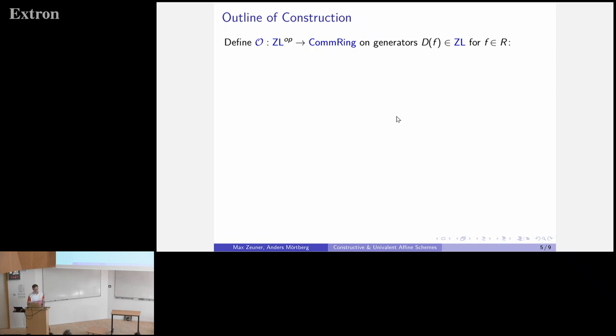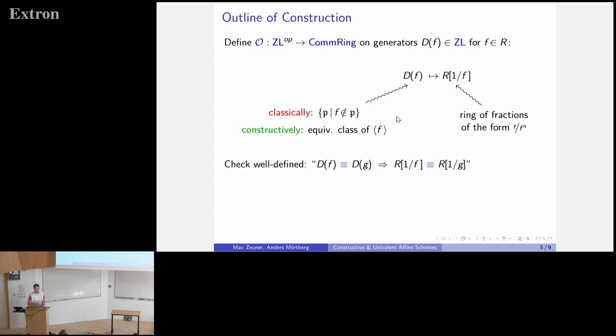This is what we do. We define the structure sheaf by defining what it does on generators first. The Zariski lattice is generated by these elements df, where f is an element in our ring. We send such a df to the localization of R at f. Classically, d of f is an open set, a generator of the Zariski topology, the set of all prime ideals that do not contain f. Constructively, it's an equivalence class of finitely generated ideals, the equivalence class of the principal ideal generated by f. Then R of f is the ring of fractions of the form r over f to the n, where the denominator is a power of f. This is the ring where we make f invertible. We have to check that this is well-defined. If d of f equals d of g, then R localized at f should be R localized at g.